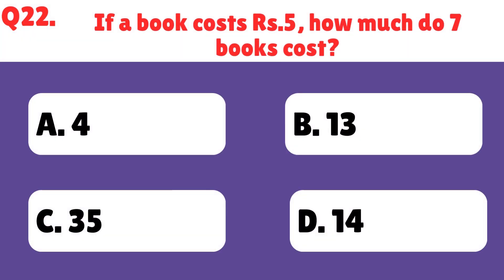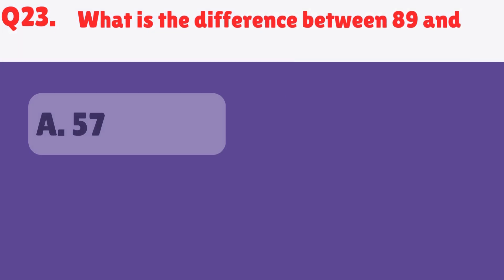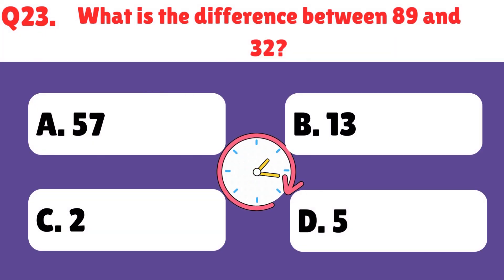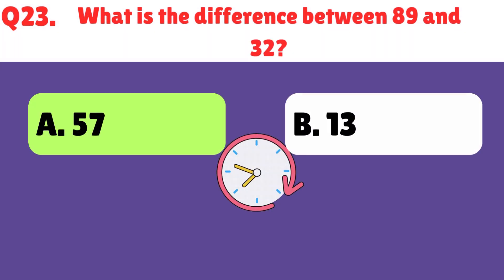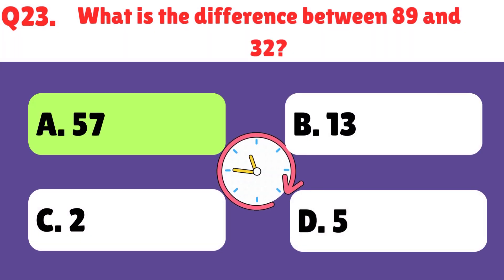If a book costs 5 rupees, how much do 7 books cost? The right answer is 25. What is the difference between 89 and 32? The right answer is 57.